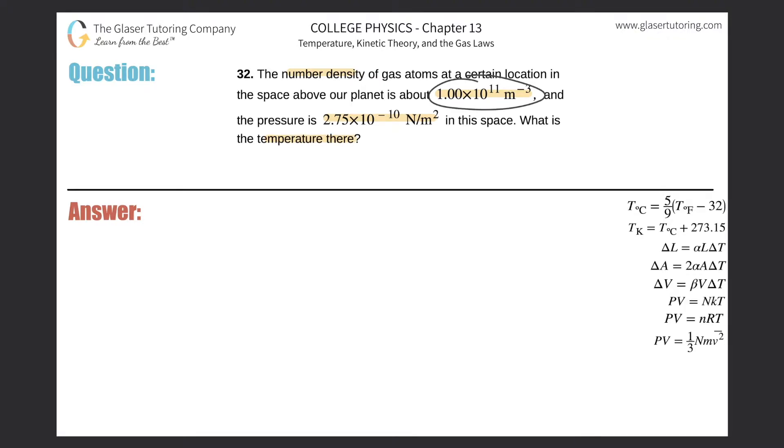All right, so first thing is let me just reinterpret this value here. As I was trying to stress when I was reading it, they told us that basically there are 1×10^11 atoms per cubic meter. That's what's meant by the number density. Now remember, in terms of this chapter, atoms is represented by a capital N in terms of the variable.